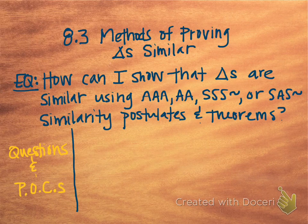Section 8.3 talks about the different methods of proving triangles similar. This is similar to when we were proving triangles congruent using SSS, SAS, ASA, or HL, but we have different postulates and theorems. The essential question is: how can I show that triangles are similar using AAA, AA, SSS similarity, or SAS similarity? Notice the similarity symbols — these are not the same as SSS and SAS for congruent triangles.